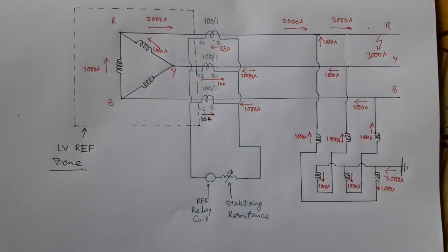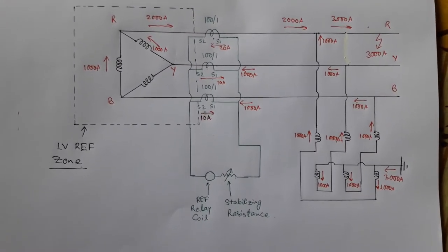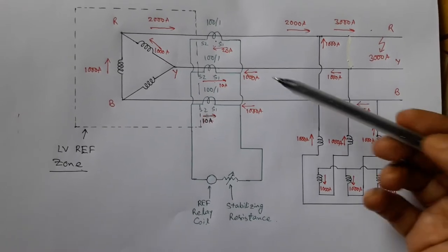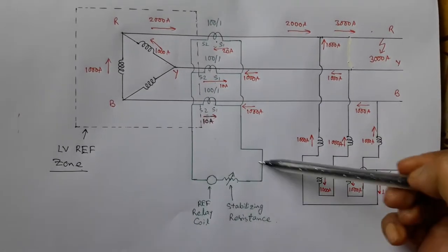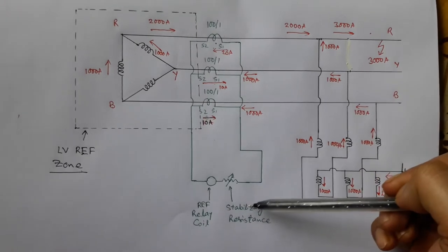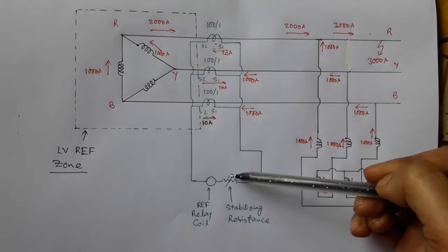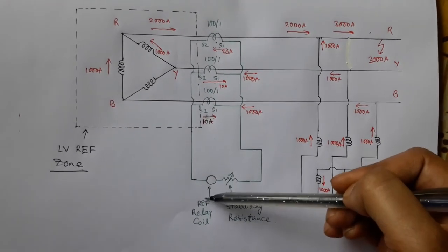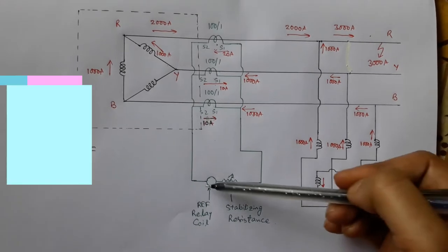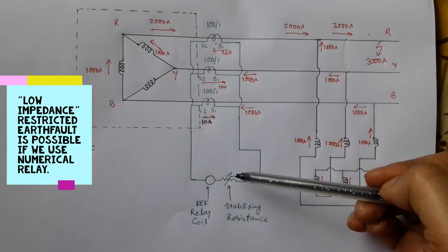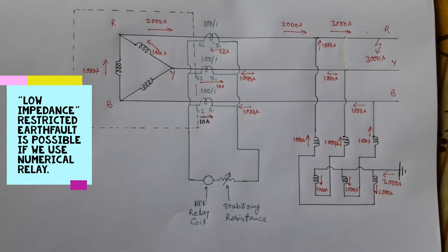In this example we are discussing a traditional restricted earth fault relay. In this restricted earth fault protection, a high value of stabilizing resistance is connected in series with the REF coil. That is why this type of protection is also called high impedance restricted earth fault relay.